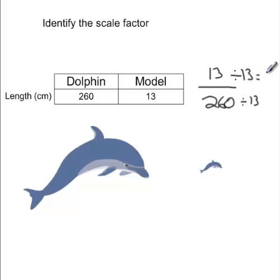13 divided by 13 would equal 1. 260 divided by 13 would go into it. So 2 times 13 is 26. So that's 0, 13 would go into 260 20 times. So we'd have 1 over 20.